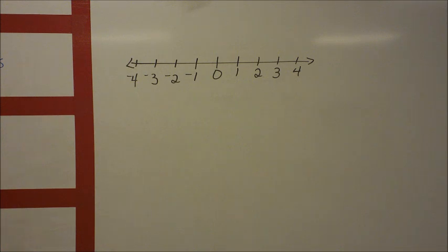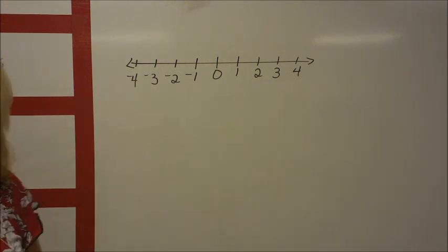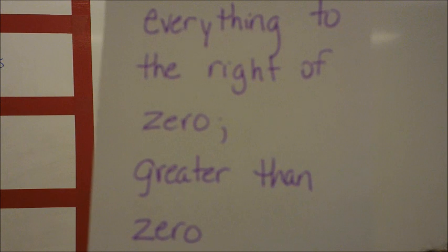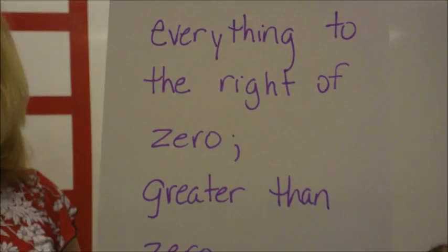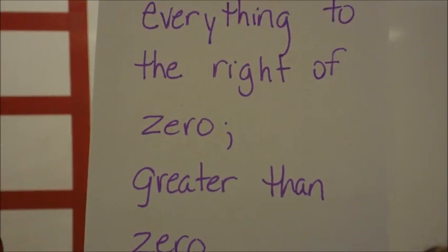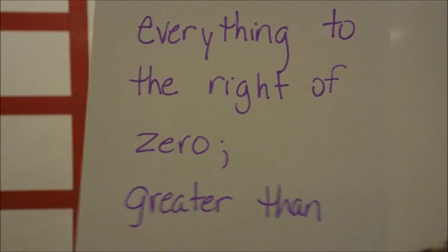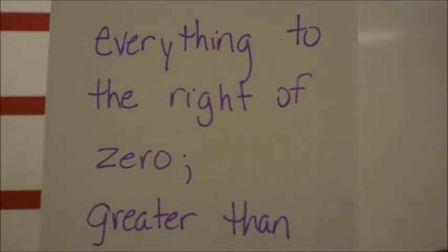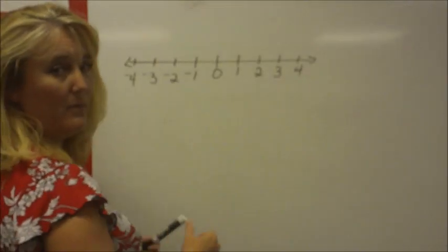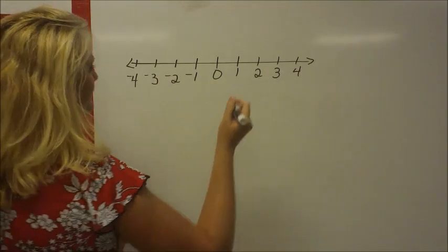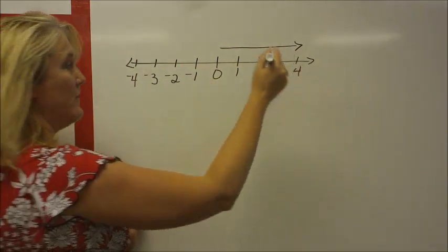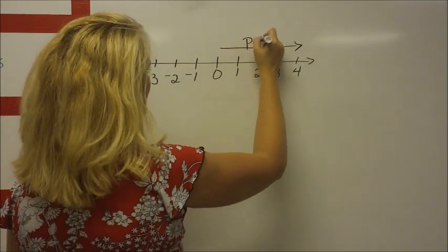Your next vocabulary word is positive — turn to the P's, P-O-S-I-T-I-V-E. The definition of positive means greater than zero. On the number line, everything to the right of zero is positive.